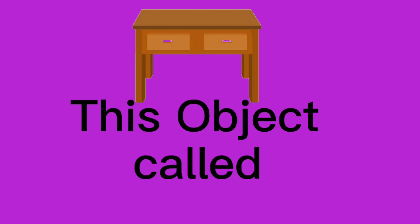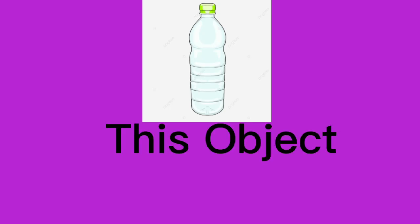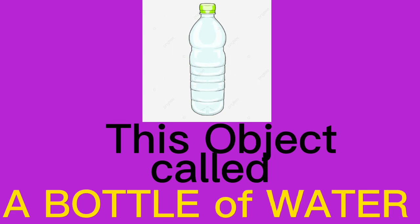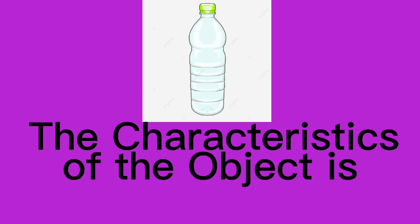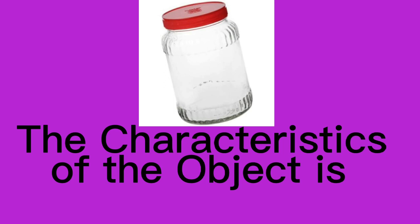This object is called a table. The characteristics of the object is opaque. This object is called a bottle of water. The characteristics of the object is transparent. This object is called tracing paper. The characteristics of the object is translucent. This object is called a glass jar. The characteristics of the object is transparent.